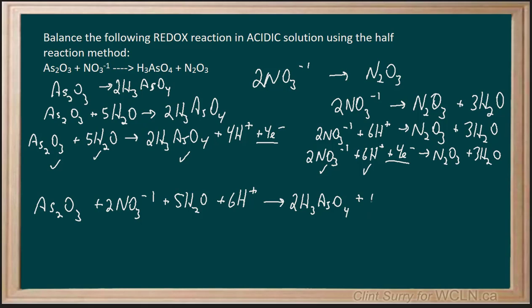I then go to 2H₃AsO₄, that's that one, plus N₂O₃, that's that one, plus 3H₂O, that's that one, plus 4H⁺, that's that one. Now we're going to cancel off overlaps between the two sides. I've got 5 water on one side, 3 on the other, so I'll cancel the 3 and make that a 2.